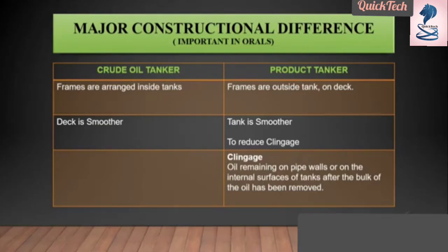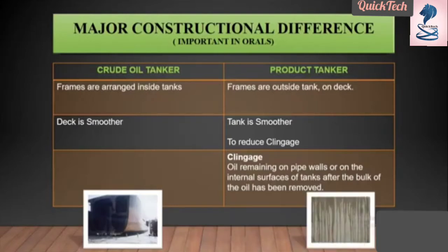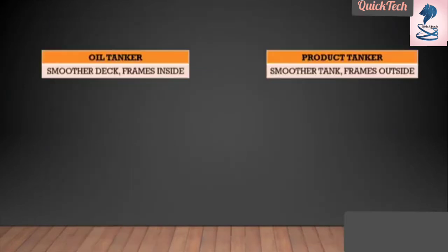What is clingage? Clingage means the oil remaining on the pipe walls or on the internal surfaces of the tank after the bulk of the oil has been removed. You can see here the tanks are having the frames inside in the crude oil tanker, whereas you can see the clingage on the walls of the tanks after discharging has been done.